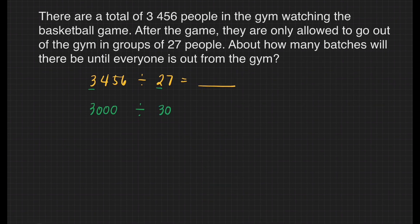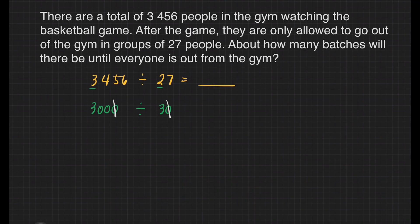Now let's cancel the zeros — it will make our work easier and faster. We will cancel one zero from our dividend and one zero from our divisor. Now we can divide 300 divided by 3, and that will give us 100. It means there will be about 100 batches of people so that they can all go out from the gym.